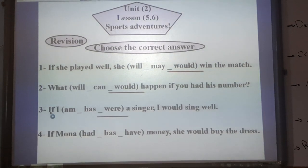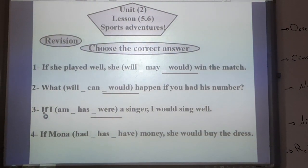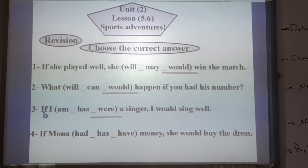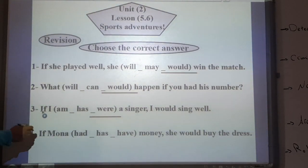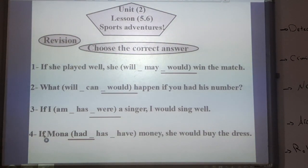Four. If Mona has, had, have money, she would buy the dress. She would buy. So we will choose if Mona had money.